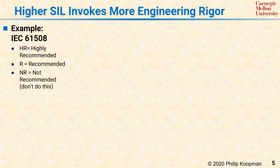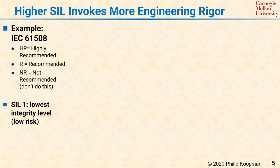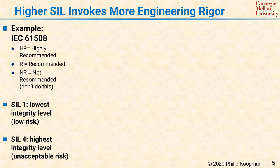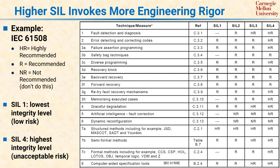As mentioned previously, for this safety standard, SIL 1 is the lowest integrity level and presents low risk. Generally speaking, SIL 1 systems require a reasonable level of engineering rigor but not a lot of special techniques for safety. This example table extracted from IEC 61508 shows that for SIL 1, a number of techniques are recommended, but only one is highly recommended — using structured methods for writing the code.